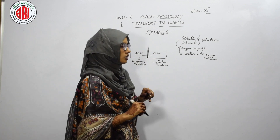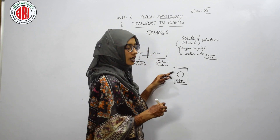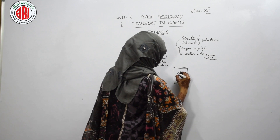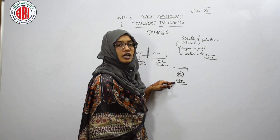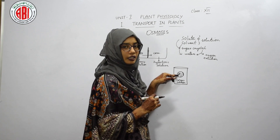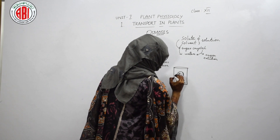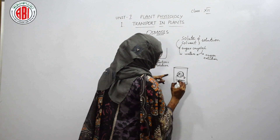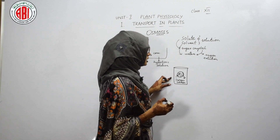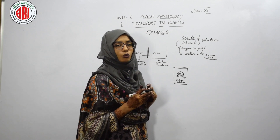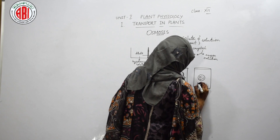Let us see some situations where we place an animal cell and a plant cell in three different solutions. The first is isotonic solution — a solution that shows equal concentration with that of the inner cell content. When we place the animal cell in isotonic solution, the concentration of the solution is the same as the inner cellular content. So the water molecules move into the cell and simultaneously water molecules from the inner cellular content move out, resulting in net movement of water molecules in and out of the cell.